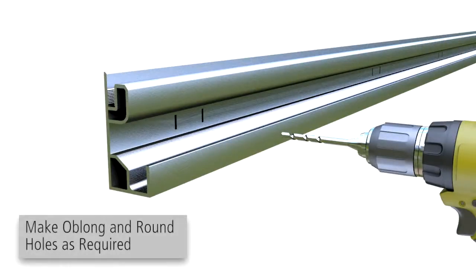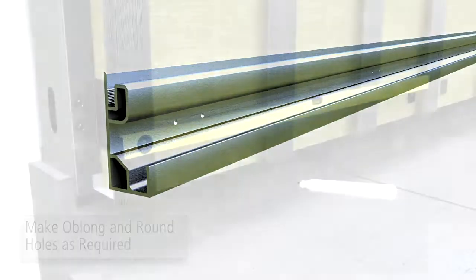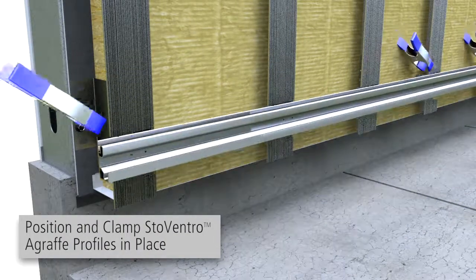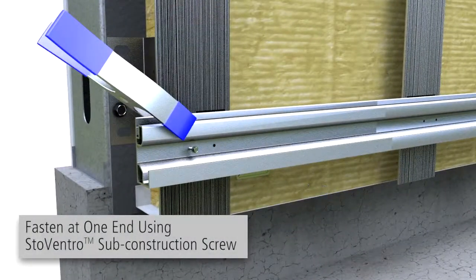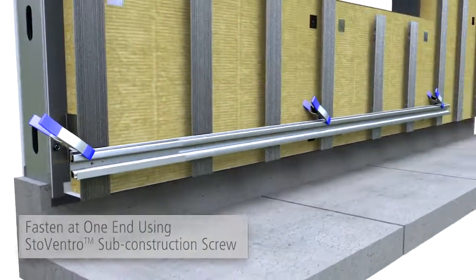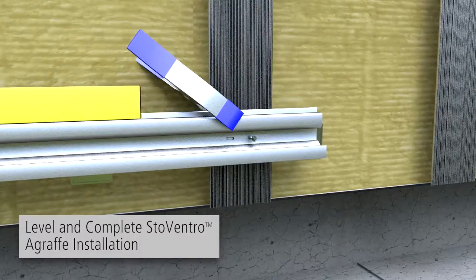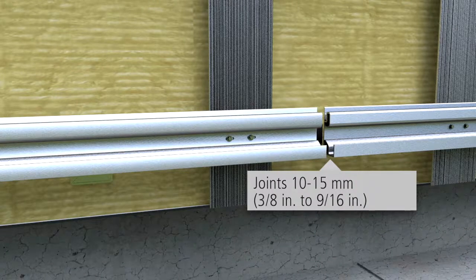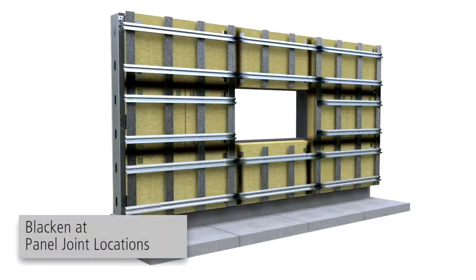Ream or punch slotted oblong holes and drill round holes at the marked locations as required. Locate and mark profile locations using a level and clamp the profile in place. Fasten profile by installing a StoweVentro sub-construction screw at one end. Check level and fasten at the other end and then install all screws, placing the screws in the center of oblong holes. Joints between adjacent profiles should be between 3/8 and 9/16 inch. Blacken the sub-construction and insulation at panel joint locations.